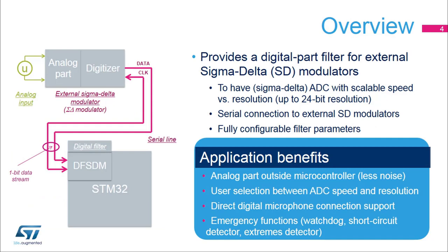The DF-SDM was developed due to a need for a sigma-delta ADC with scalable speed versus resolution. More than 16-bit accuracy inside a microcontroller is a problem because of noise from the digital part. The solution is to move the analog part outside the microcontroller. The speed versus resolution ratio setting is a task for the internal digital part, which is the digital filter in hardware. Although it behaves like a complete analog to digital converter with an external analog front end, the DF-SDM is purely digital with its analog part outside the microcontroller.